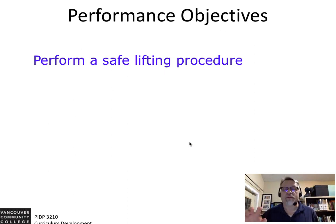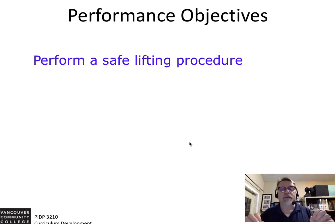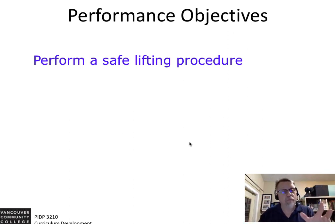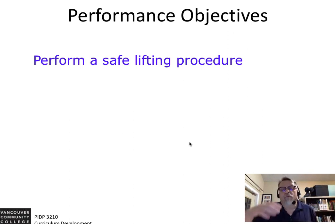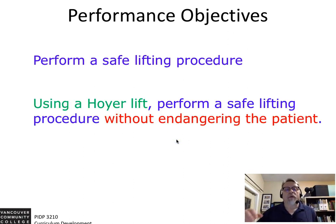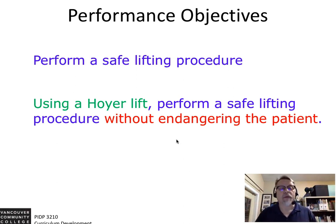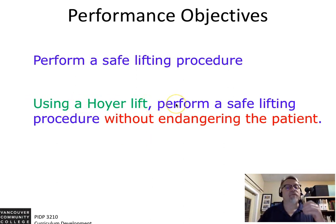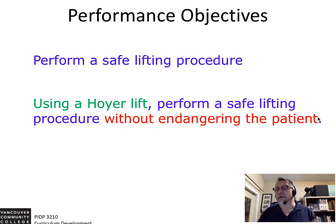A performance objective is really taking one of the objectives that you've developed and adding two key components: condition and criteria. For example, 'perform a safe lifting procedure' is the objective you might have developed. Now, 'using a Hoyer lift to perform a safe lifting procedure without endangering the patient' is a performance objective. The condition is 'using the Hoyer lift,' the objective is 'perform a safe lifting procedure,' and 'without endangering the patient' is the criteria.